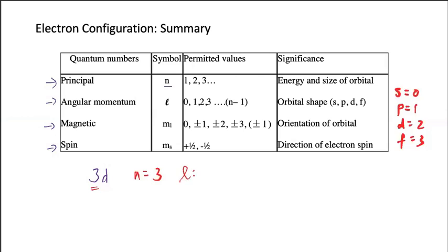So the ℓ is 2. And how do we find this? Well, another way to look at this is that it is n minus 1. So in here, we have 3, 3 minus 1, that would be 2. So it is confirmed.